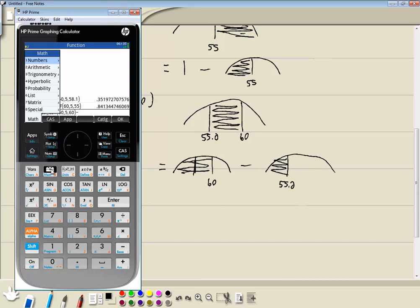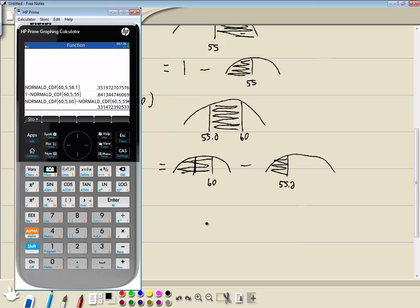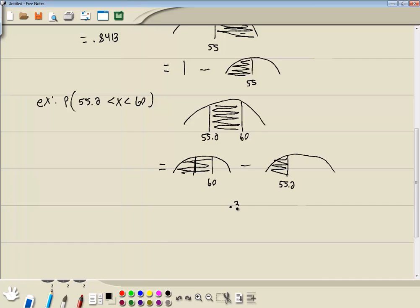And then I'll do my second one. So I'll choose my toolbox menu and bring up probability, 5, choose 6 for cumulative, choose 1 for normal. I'll put in my mean which was 60, comma, my standard deviation which is 5, comma, and then my X value which in this case is 55.2. And then I'll press enter. And we get .3315 rounded to four decimal places. And that would be our answer.